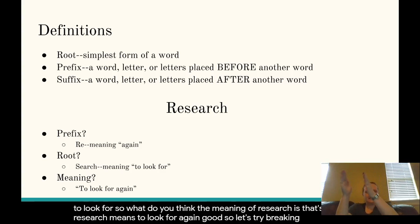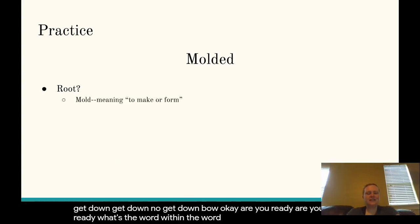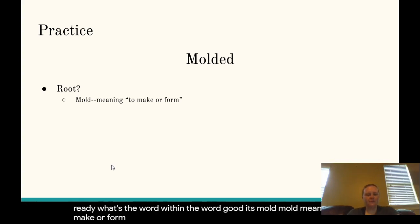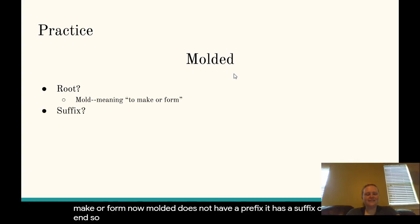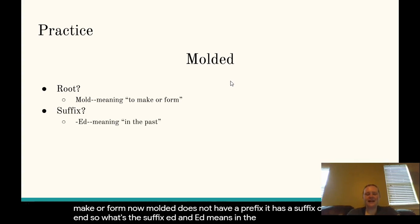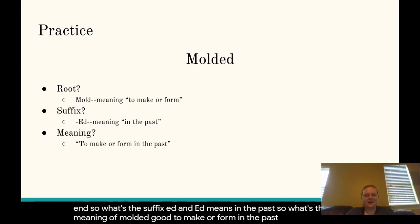Let's try breaking down some more words. What about 'molded'? What is the root of the word molded? It's 'mold.' Mold means to make or form. Now molded does not have a prefix — it has a suffix on the end. So what's the suffix? 'Ed.' And 'ed' means in the past. So what's the meaning of molded? To make or form in the past.